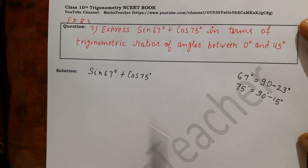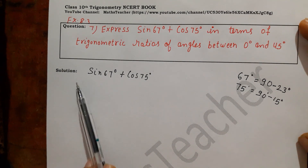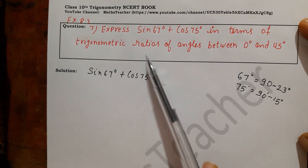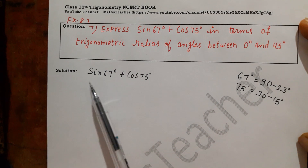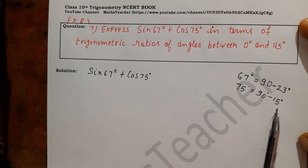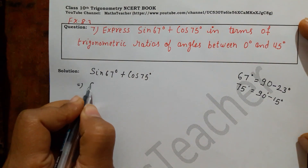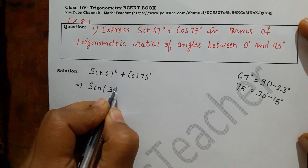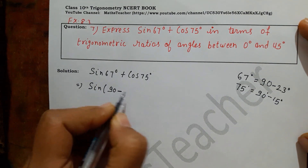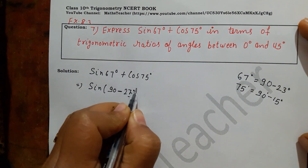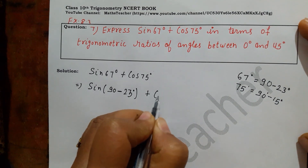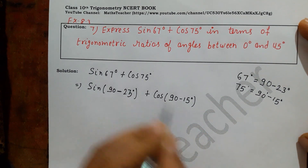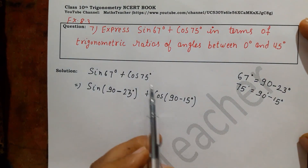We can do the question two ways — we can change the sign or change the angle, because here we are taking angles between 0° and 45°. So what we are doing is writing the complementary angle. The sign remains the same. How do we write 67°? As 90° minus 23°.